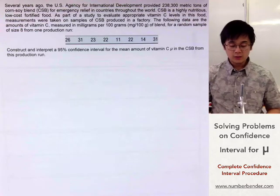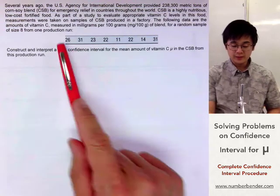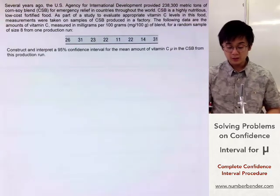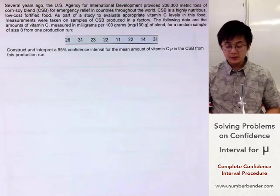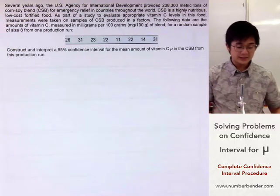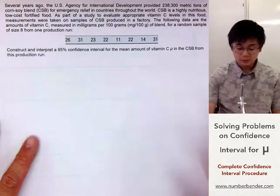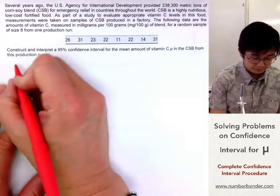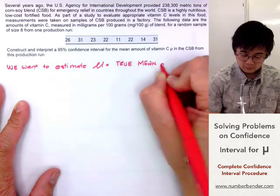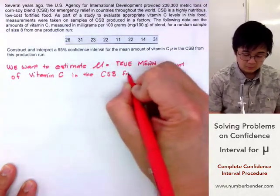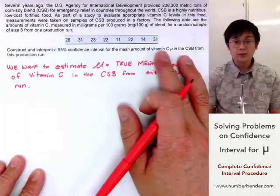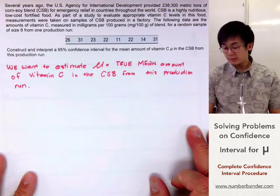In this particular confidence interval, we're supposed to use the eight samples that we have right here. And we need to construct and interpret the 95% confidence interval for the mean amount of vitamin C, which is the mu, in the CSB from the production run. The first thing that we need to do is to identify our parameter of interest, which is our mu. This is what we're trying to estimate.